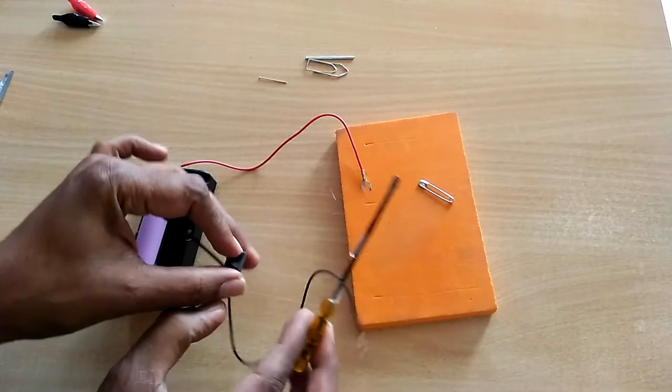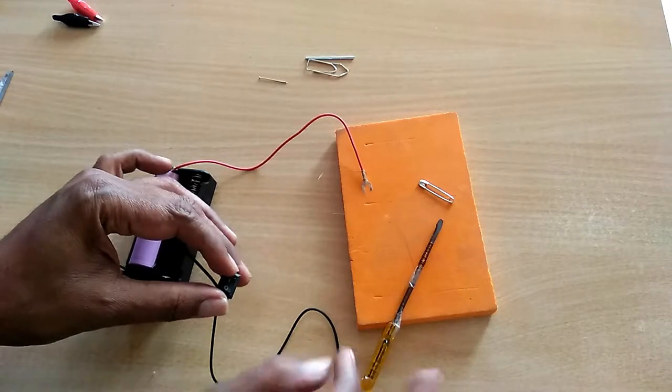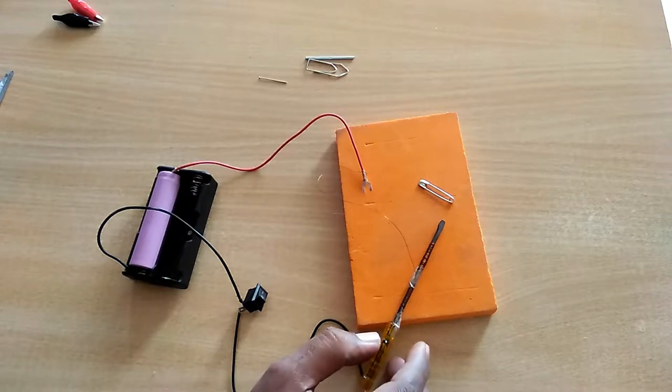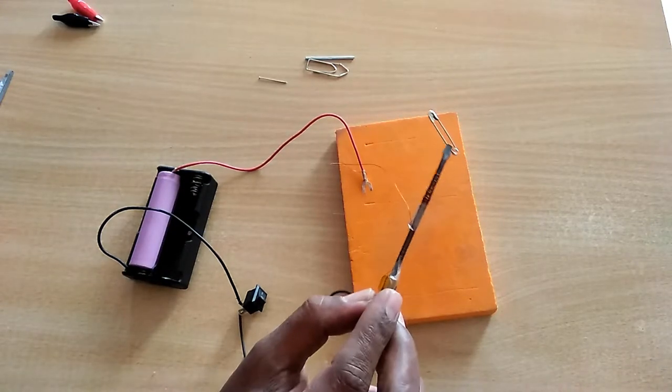Now when I turn the switch on, the current starts flowing through the magnetic coil which will induce magnetism in the metallic portion of the screwdriver.